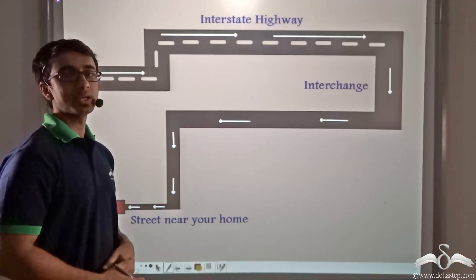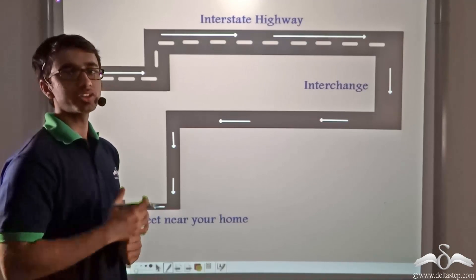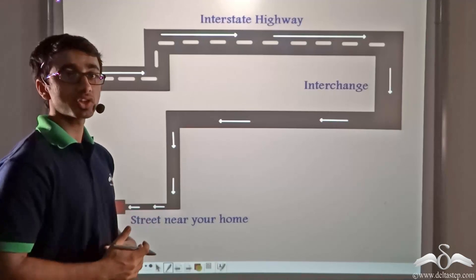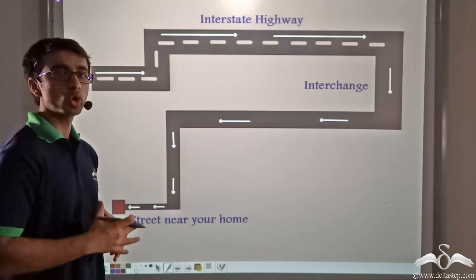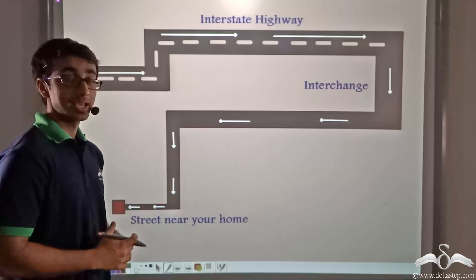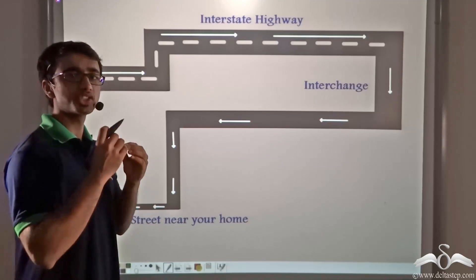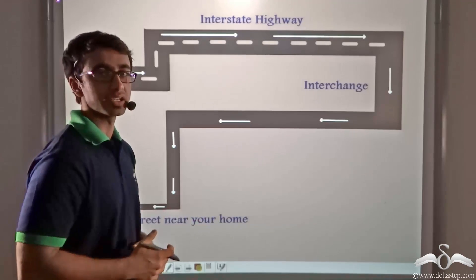You must have seen at your home that whenever you switch on the light or the television, it gets switched on immediately. Why? Because there is a constant flow of electricity into your home, as a result of which whenever you switch on any appliance, it gets switched on immediately.